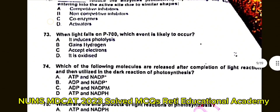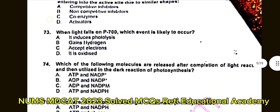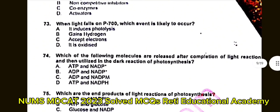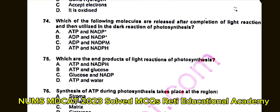Question number 74: Which are the main products of the light reactions of photosynthesis? A. ATP and NADPH. B. ATP and glucose. C. Glucose and NADP. D. ATP and water. The correct answer is A: ATP and NADPH.